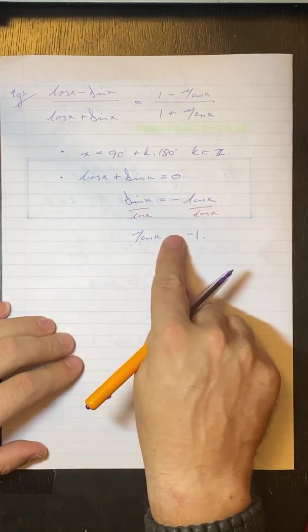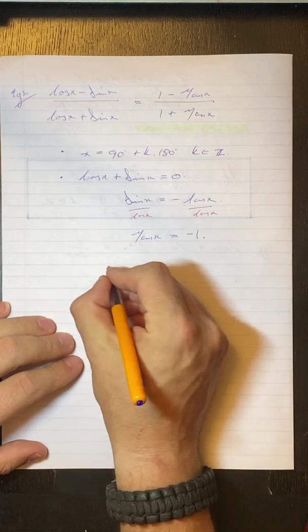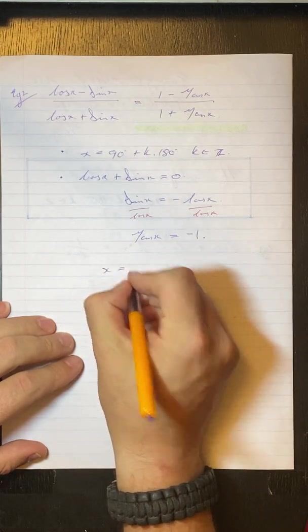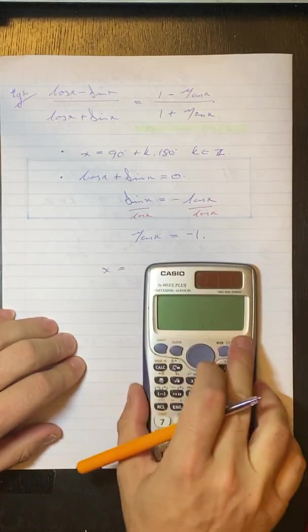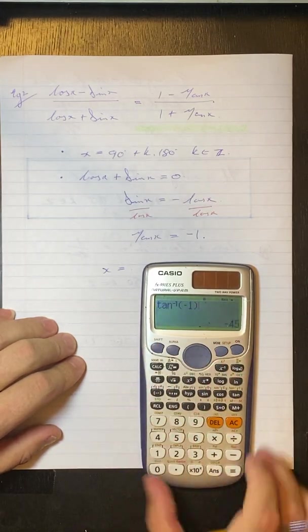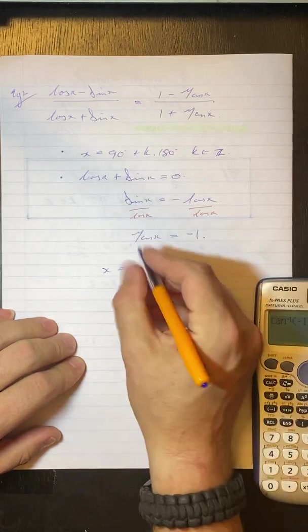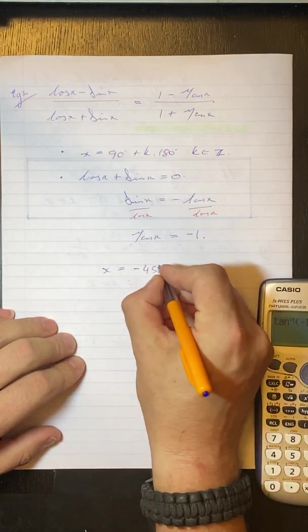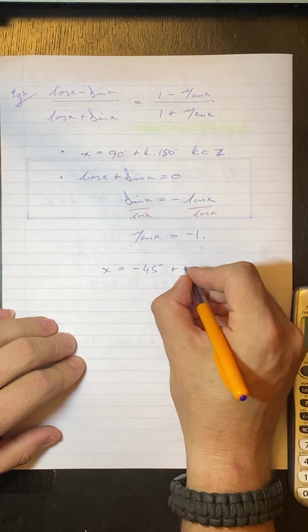So to solve for this one, it would be x is equal to, and then we go shift tan minus 1 equals and we get negative 45. And you remember with tan it's plus k 180 where k is an element of the integers.